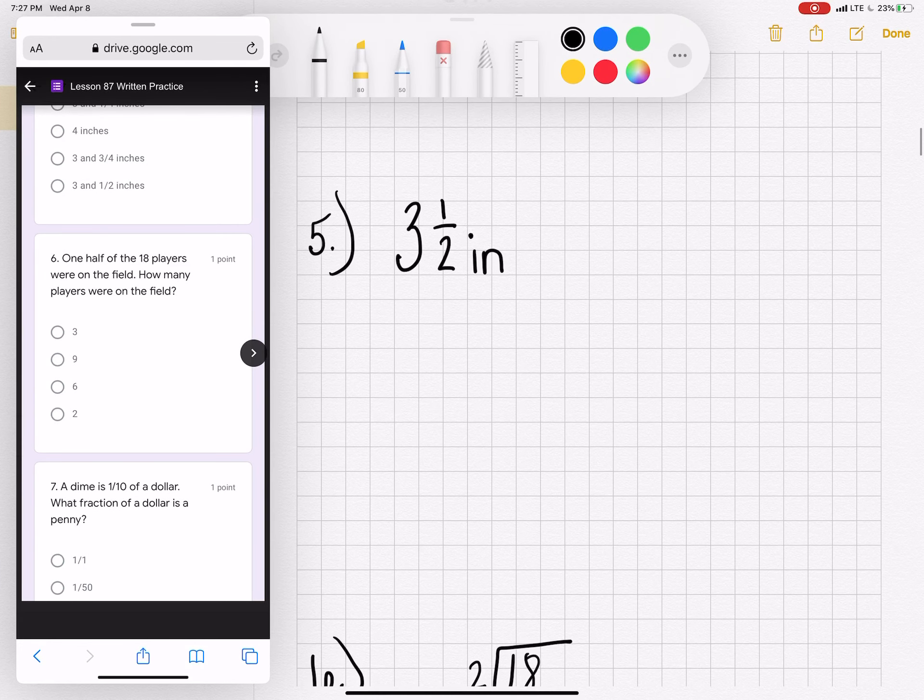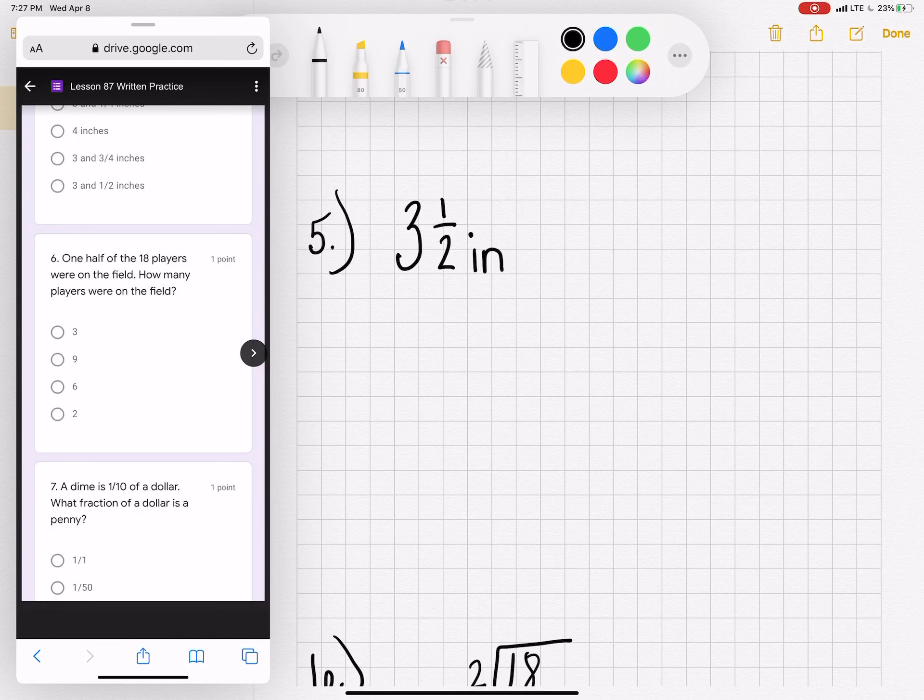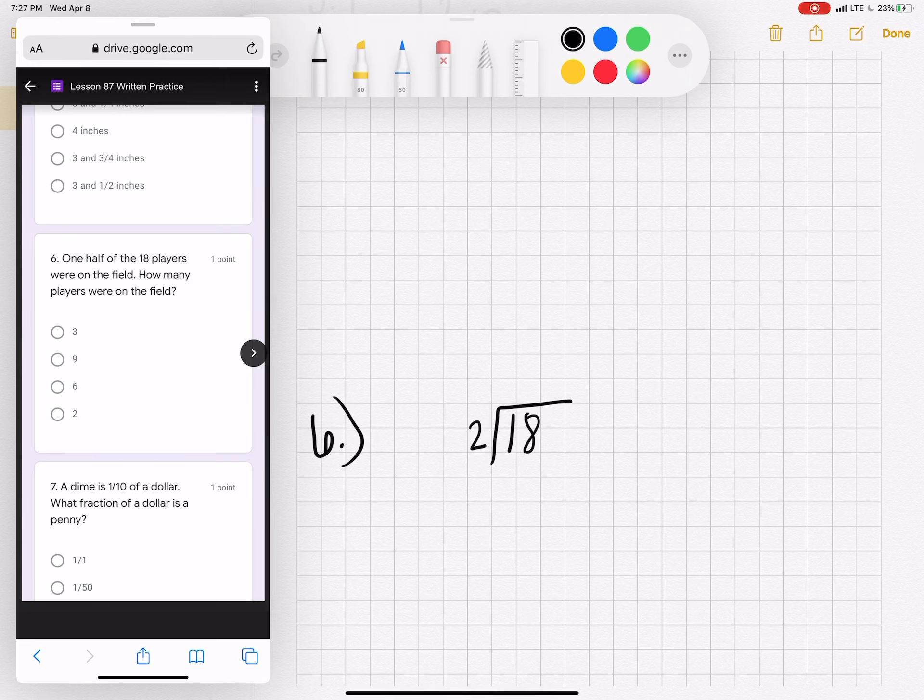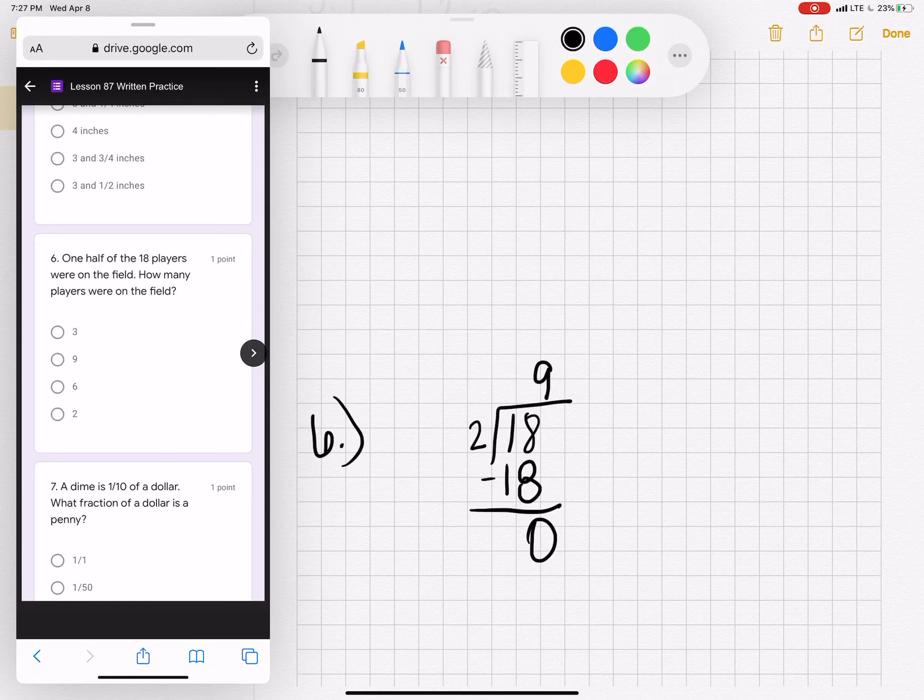Number 6. 1 half of the 18 players were on the field. How many players were on the field? Finding half of anything is code for divide by 2. 18 divided by 2 would be half of the players. If you know that 2 times 9 is 18, it makes this problem much easier. 18 minus 18. There is no remainder. So 9 players are on the field.